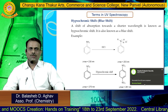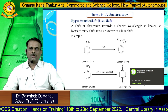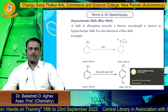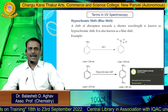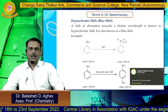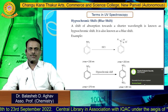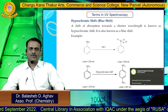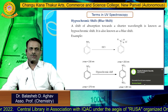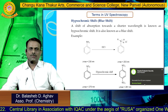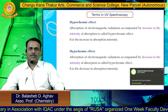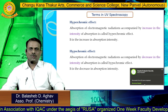The hypsochromic shift, also called blue shift, is a shift of absorption towards a shorter wavelength. For example, aniline absorbs at 230 nanometers, and in acidic medium the absorption shifts to a shorter wavelength of 203 nanometers — this is the hypsochromic shift.